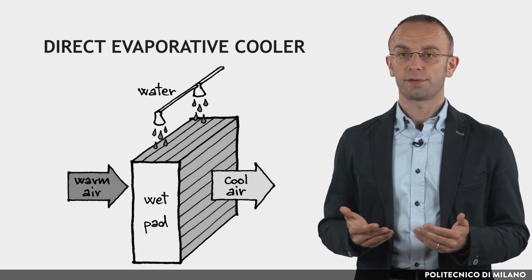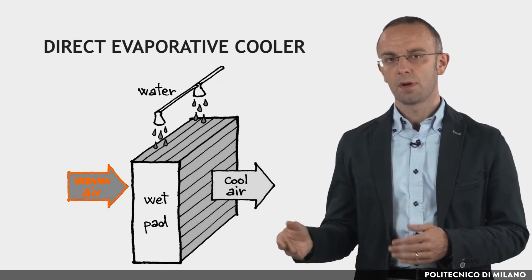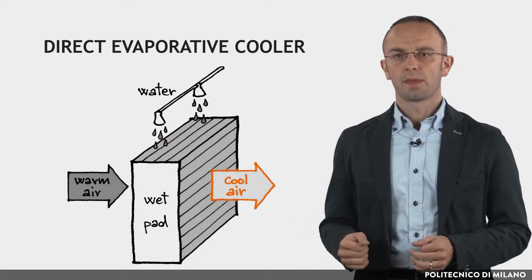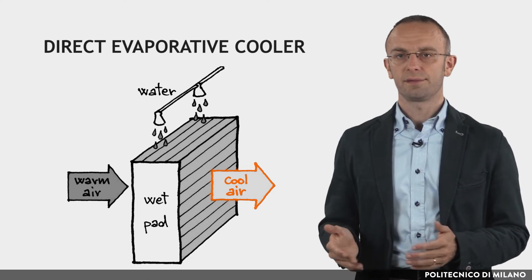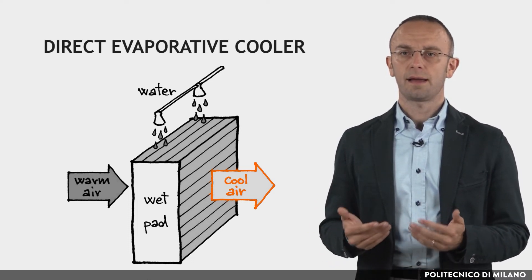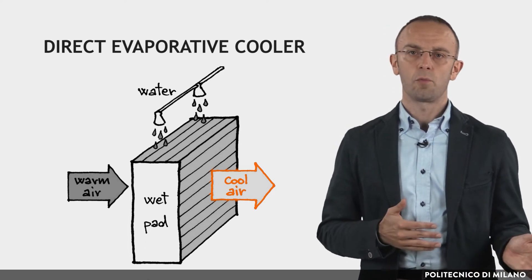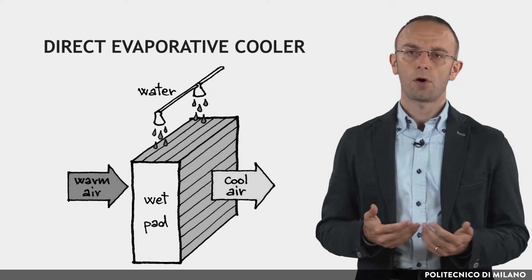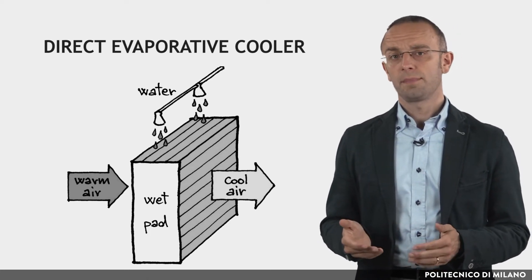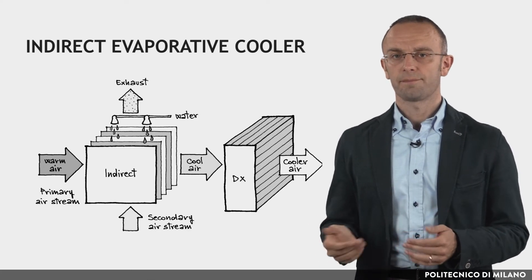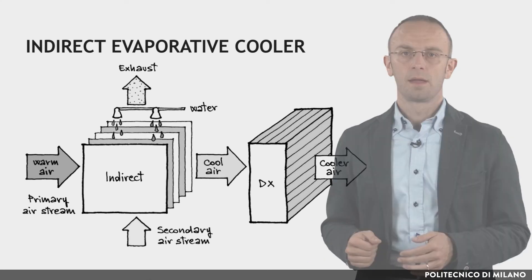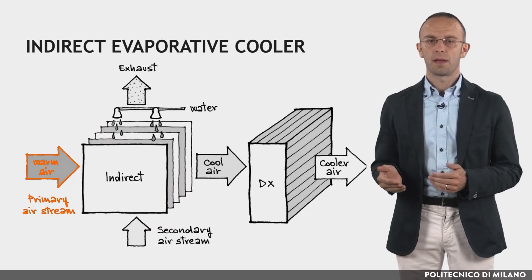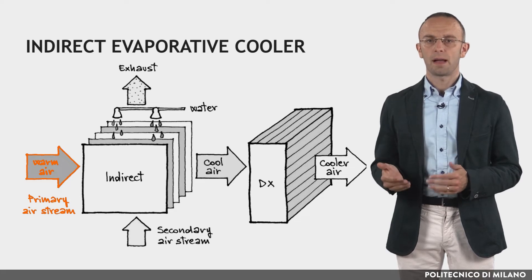In direct evaporative coolers, outside air is blown through a water-soaked medium, which is usually cellulose, and cooled by evaporation. The cooled air is circulated by a blower, cooled by 10 to 20 degrees Celsius when it crosses the water-soaked pad, and then directed into the room, pushing warmer air out through windows. However, if outdoor air humidity is not very low, indoor humidity can be too high to be comfortable. This problem can be solved with indirect evaporative coolers, where a secondary air stream is cooled by water and passes through a heat exchanger to cool the primary air stream, without adding moisture to it.